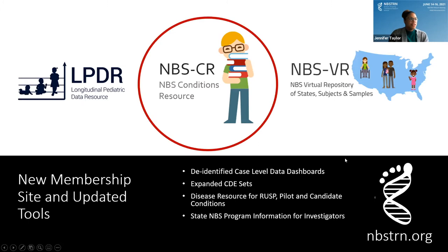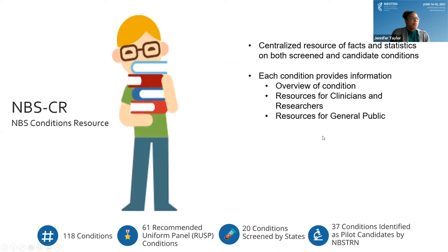The NBS condition resource is a centralized resource of facts and statistics on both screening and candidate conditions. Currently, the tool features 118 conditions, which includes 61 of the recommended uniform panel conditions split into the core condition list as well as the secondary condition list.